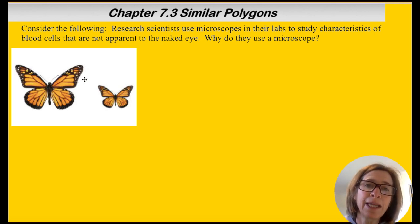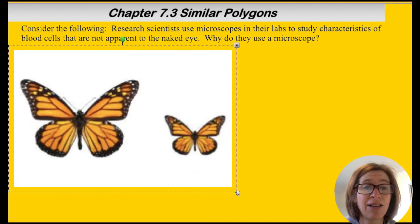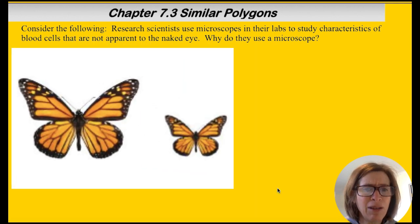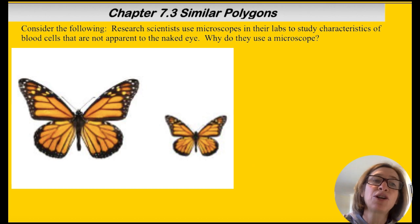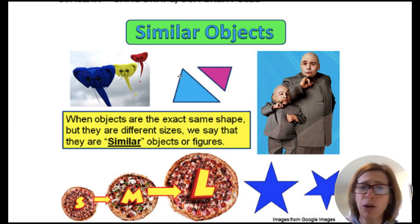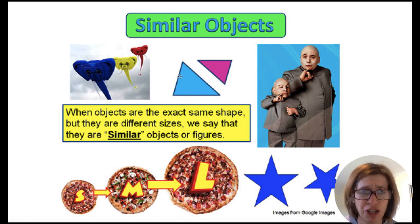So similarity is when you've got two figures that may have the same shape but may not be the same size. Take a look at these butterflies. They look very similar but we would say they are in proportion. We would not say that they are congruent. And so that's going to be where our study takes us today. So similar objects are basically the same shape, exact same shape, but they're different sizes. We say that they're similar.